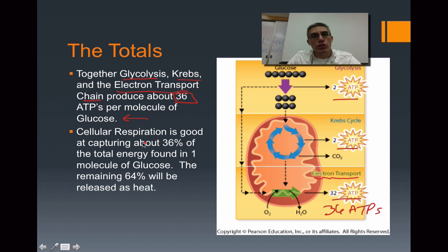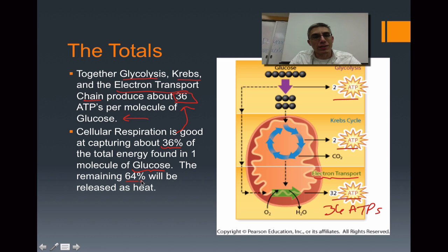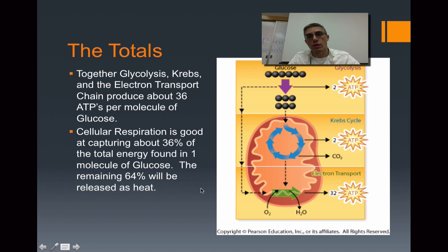Cell respiration is really good at capturing around 36% of the total energy found in one molecule of glucose — notably similar to the 36 ATPs taken from glucose. The remaining 64% of total energy from the glucose molecule is not in the form of chemical energy the cell can use; it's released as heat energy, which helps keep us warm but can't power cell processes. That finishes up our second screencast for Chapter 9 — please make sure you've completed your screencast notes before coming to class.